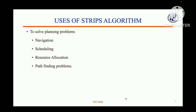We use the STRIPS algorithm for navigation, where an agent needs to move from one location to another. We can also use it for scheduling — for example, scheduling an appointment where the precondition would be 'not scheduled' or 'available' and the effect would be 'scheduled'. Other uses include heuristic search algorithms and CSP (Constraint Satisfaction Problems).